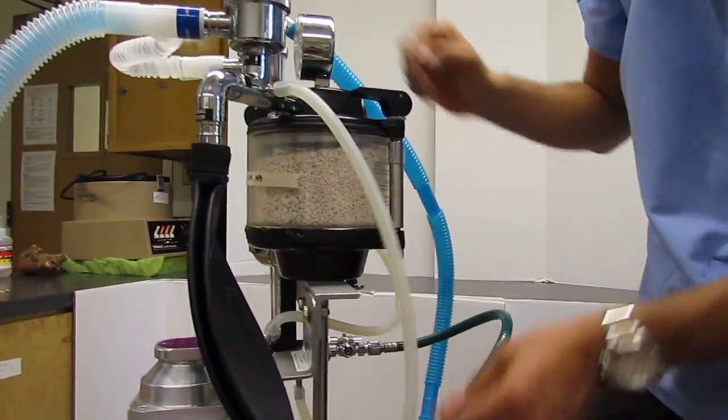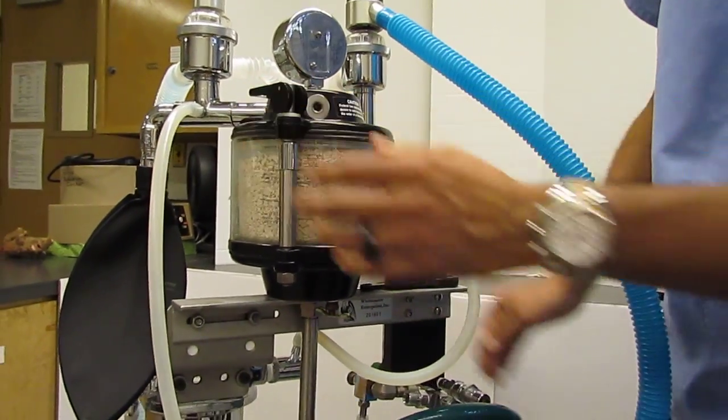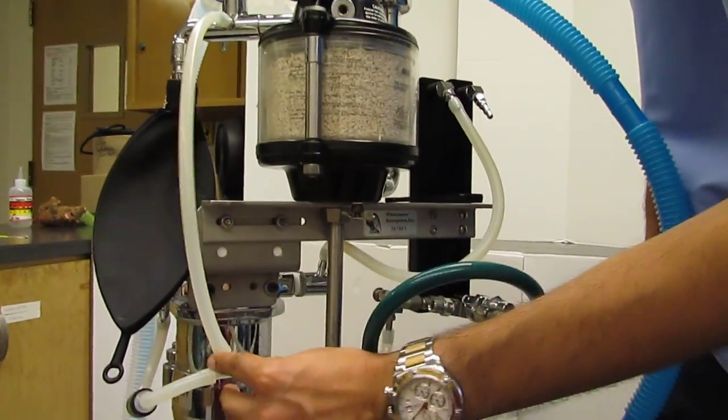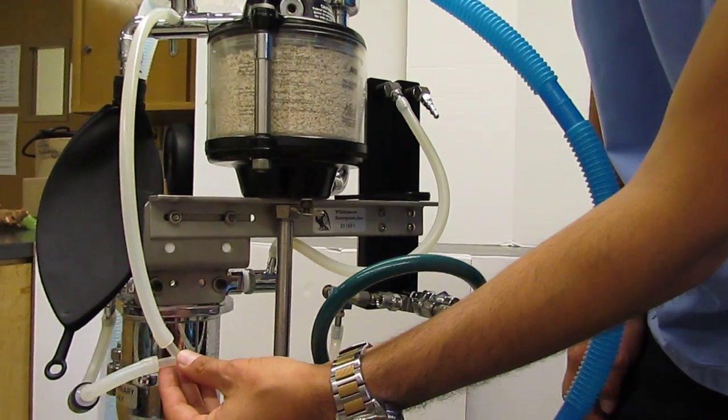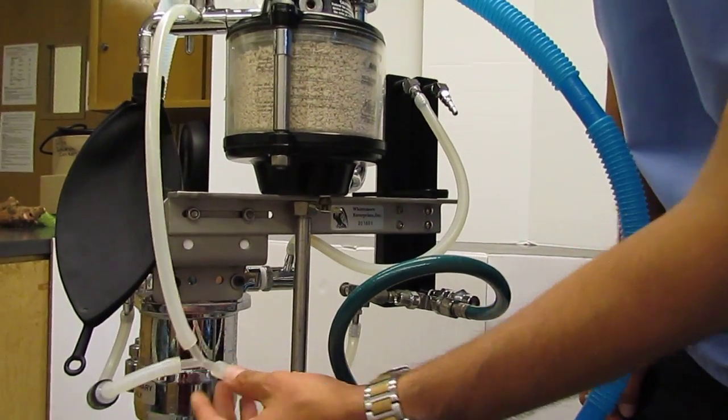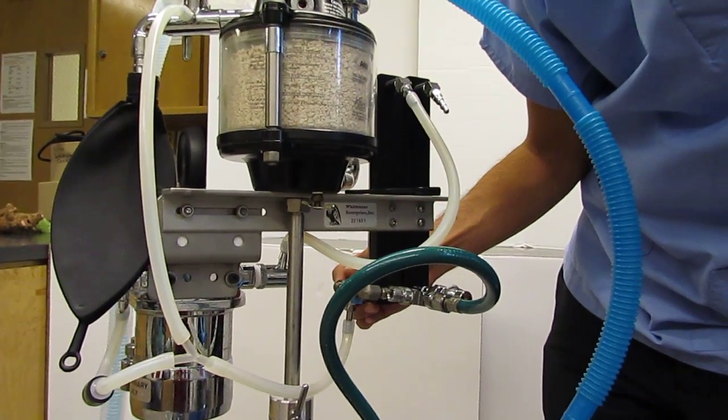Now, you'll notice back here as well, while we're back here, we're going to talk about the O2 bypass. So, you'll notice here we have a little Y connector, and there's another circuit that's coming into this. The reason there's another circuit that's coming into this is because, if you remember, that was our O2 bypass.